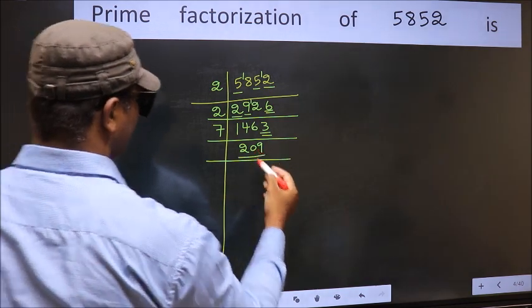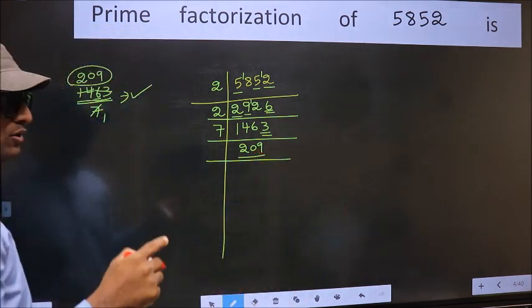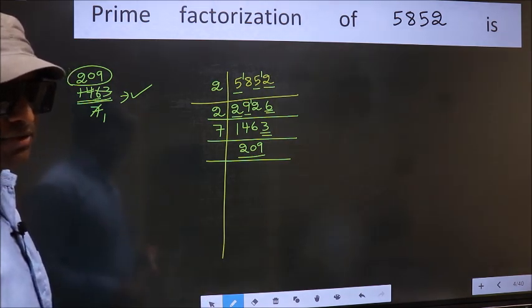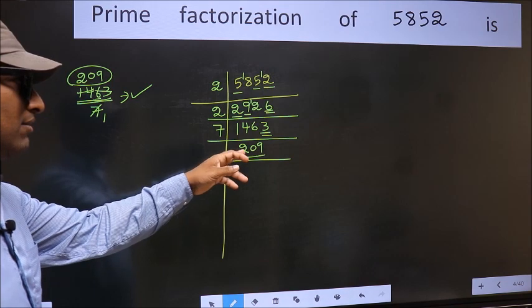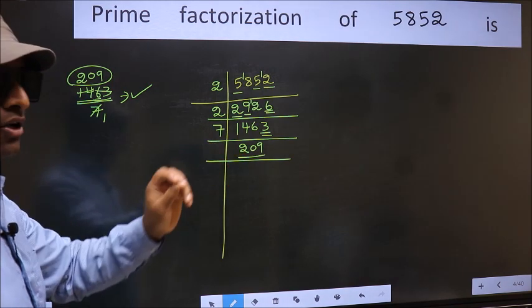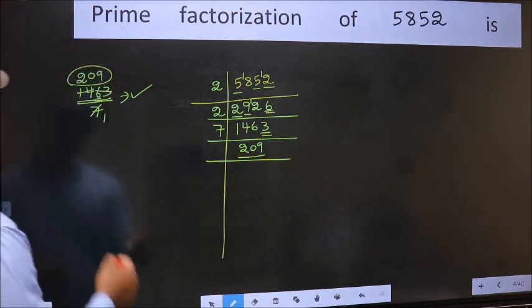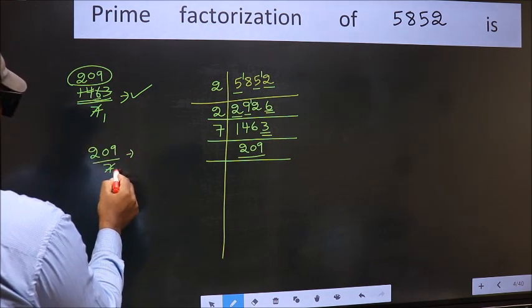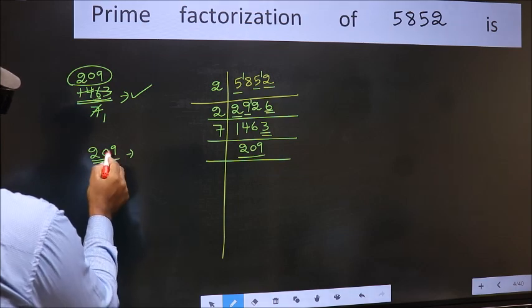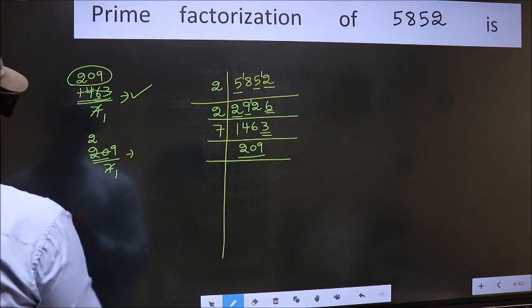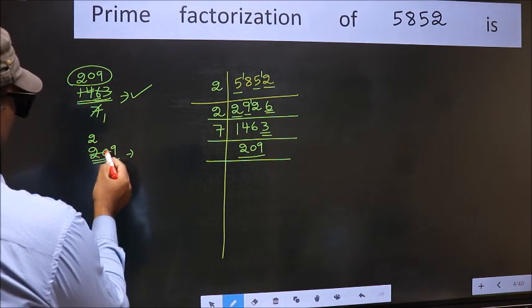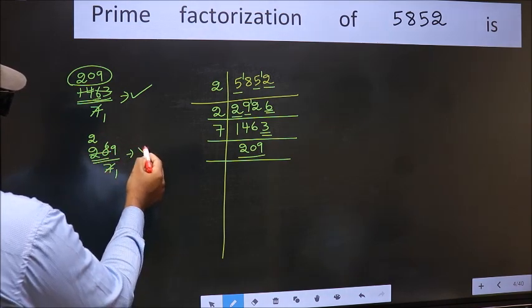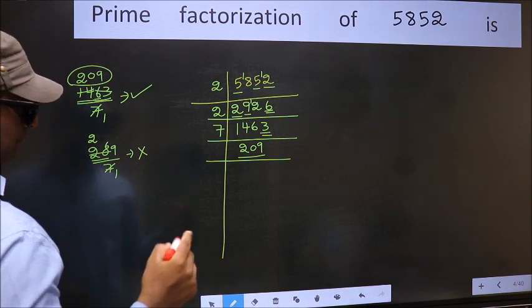Now for this number we don't need to check divisibility by 2, 3, or 5, as we had already checked before. So start checking divisibility of this from 7 onwards. So let us check. A number close to 20 in 7 table is 7 times 2 is 14. 20 minus 14 is 6, 6 carried forward 69. We don't get 69 in 7 table. So this is not divisible by 7. Next.